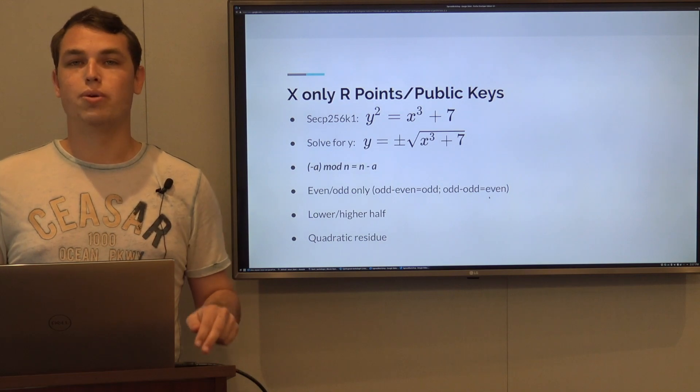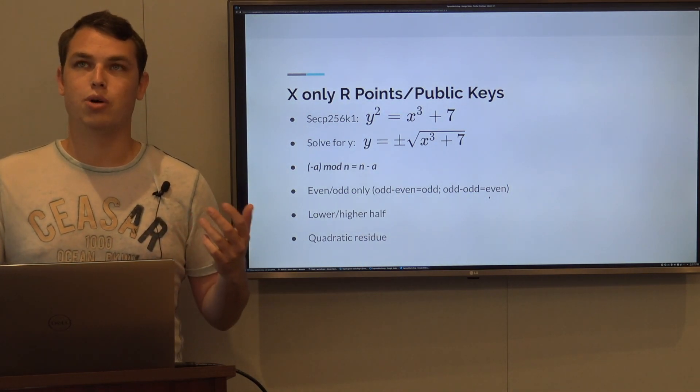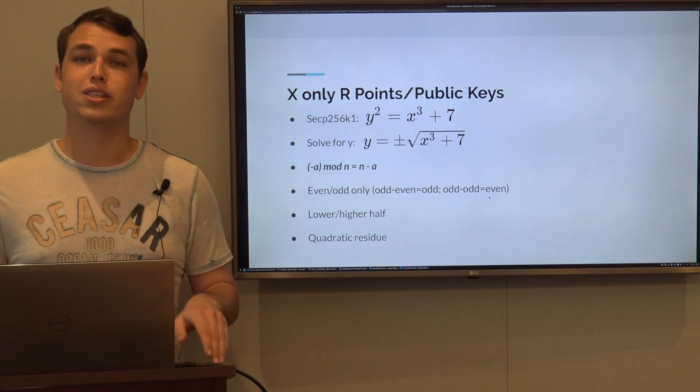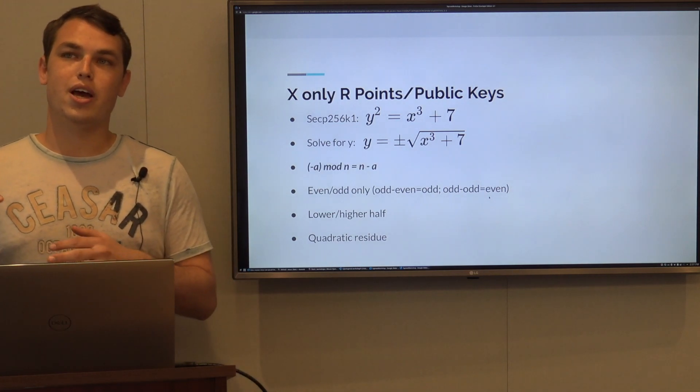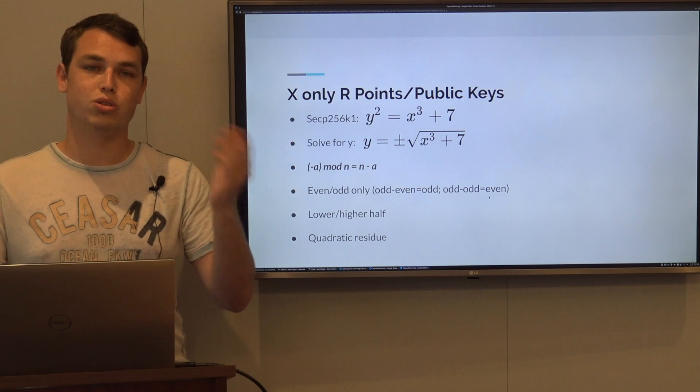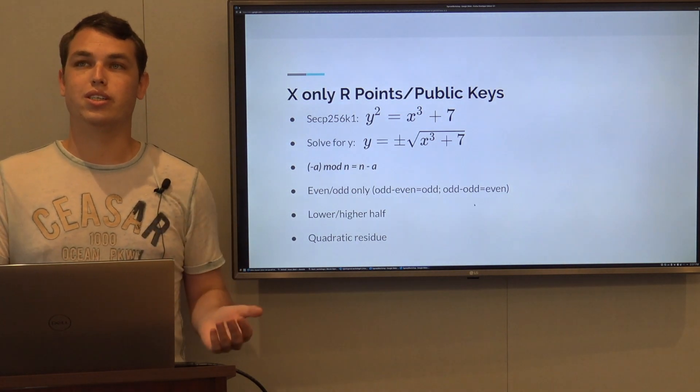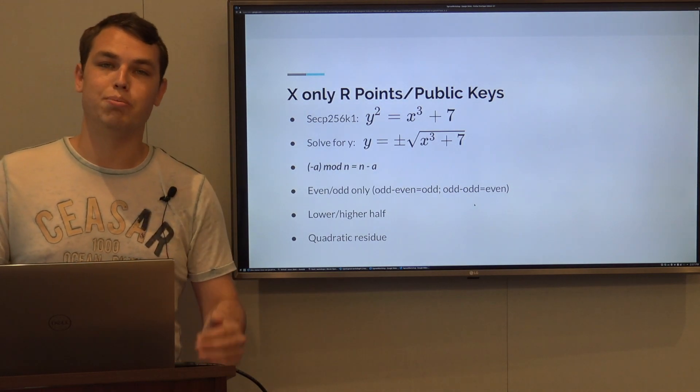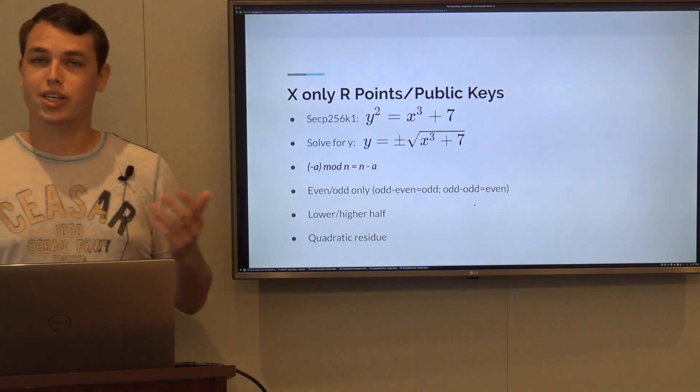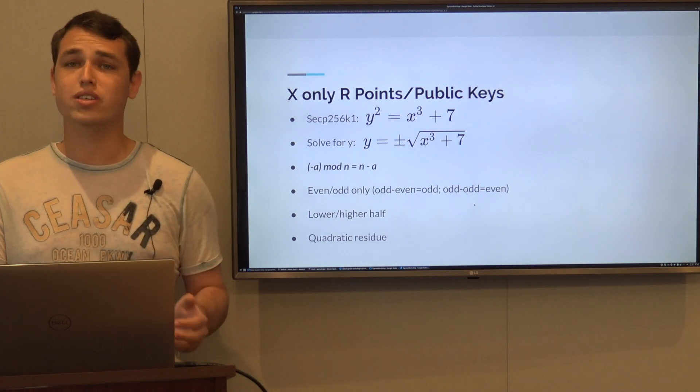Another way to do it is lower or higher half. Let's say our order is 10 and the y is 3 - if you do 10 minus 3 you get 7. So every y you have, if it's above half, the other y is going to be under the half, because that's how modulo works. We can say implicitly our y is only above the half or only under the half, and that way we don't need to send the y, we send only the x.